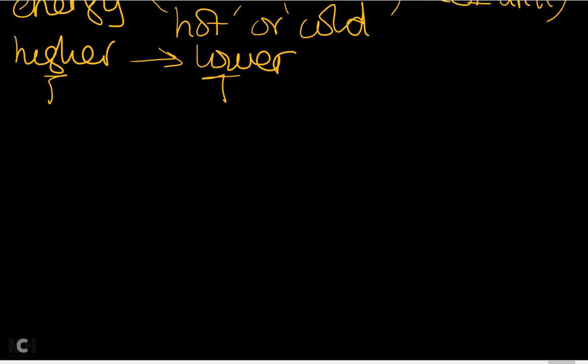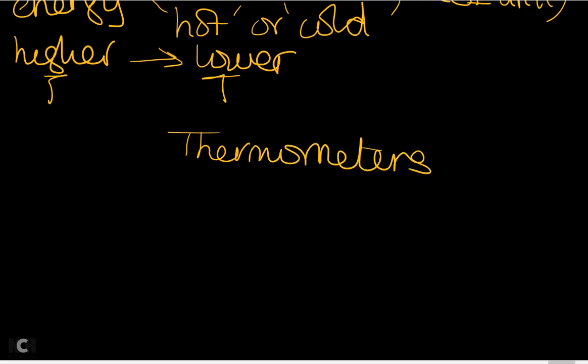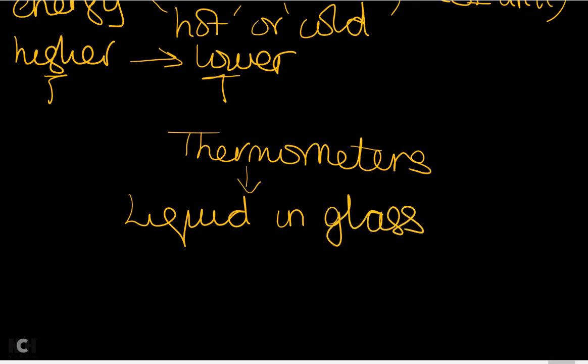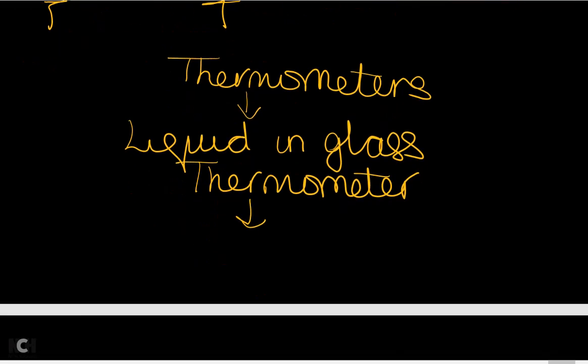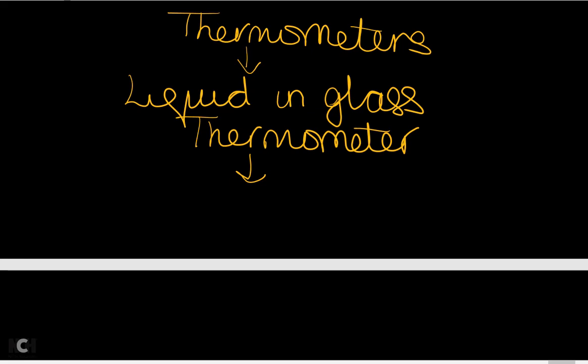One of the main instruments when we talk about thermometers is the liquid-in-glass thermometer. It uses something called a thermometric property, which is any physical property that varies linearly with temperature.